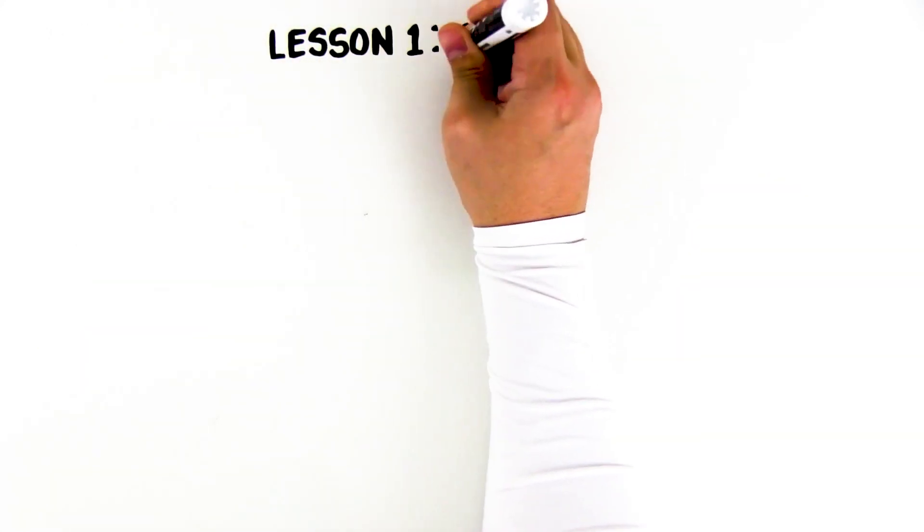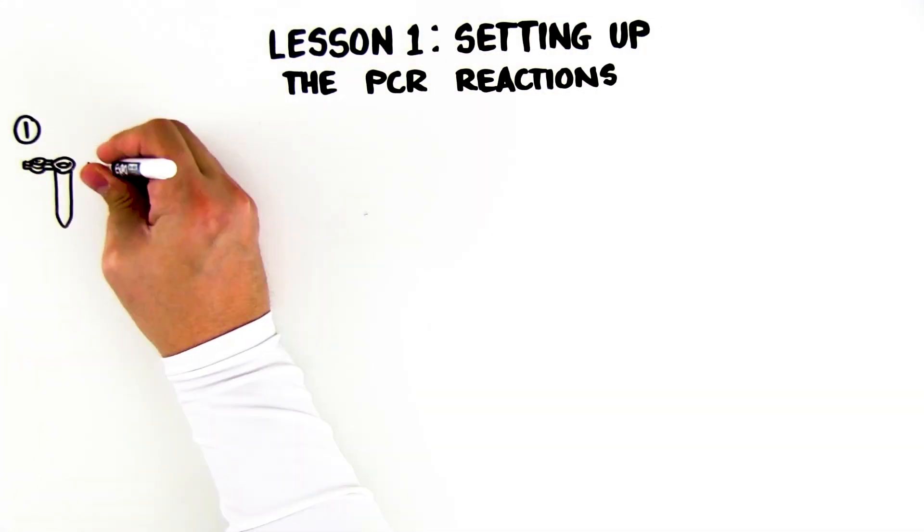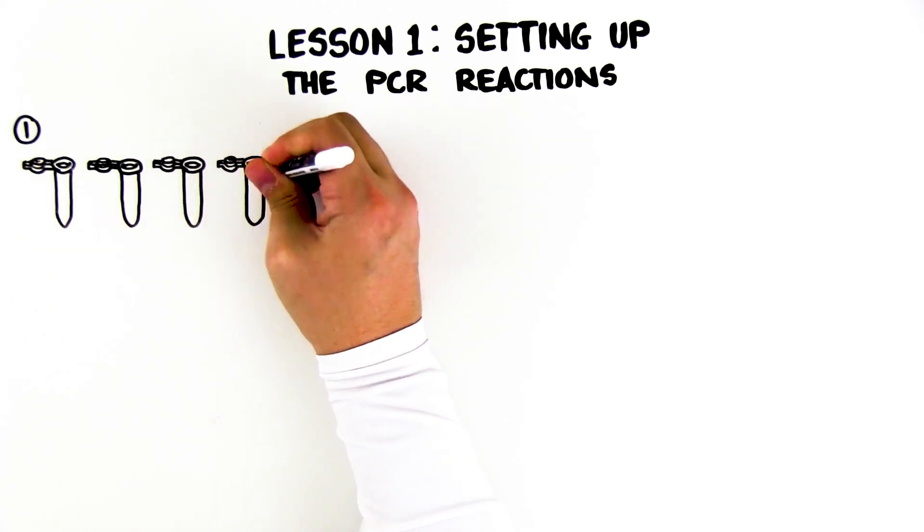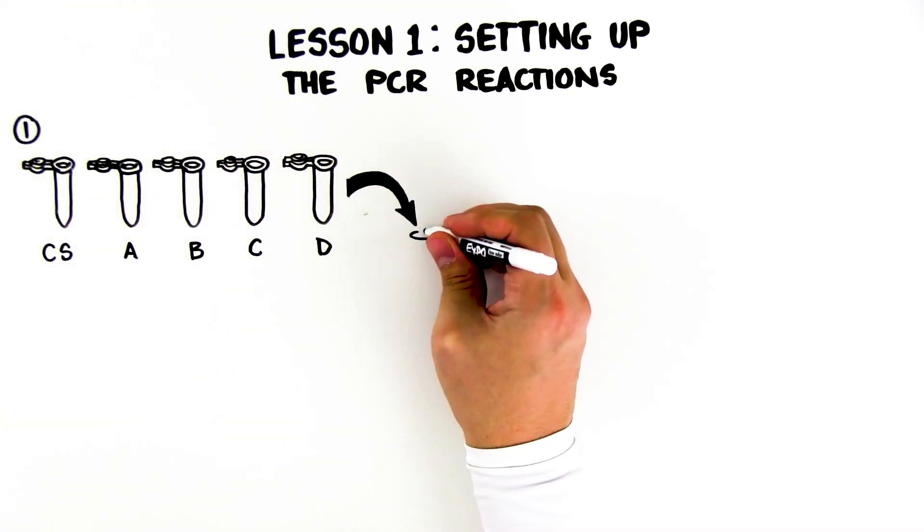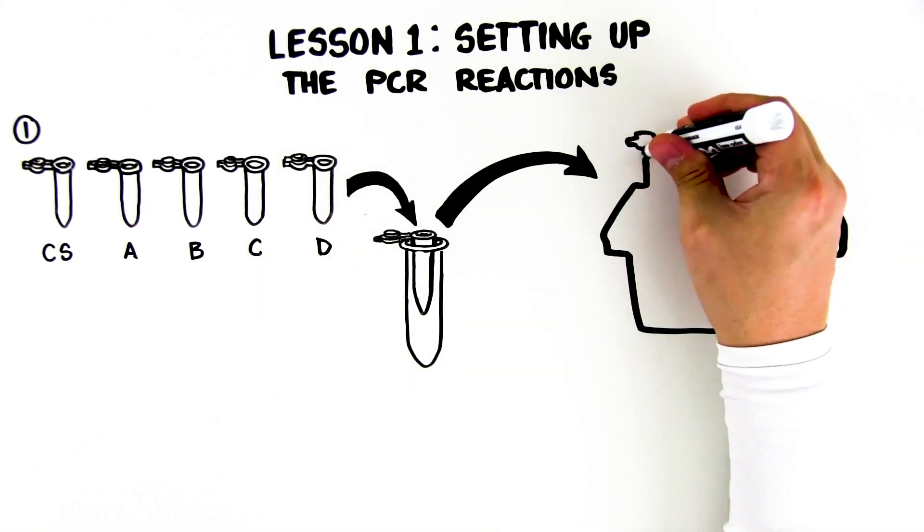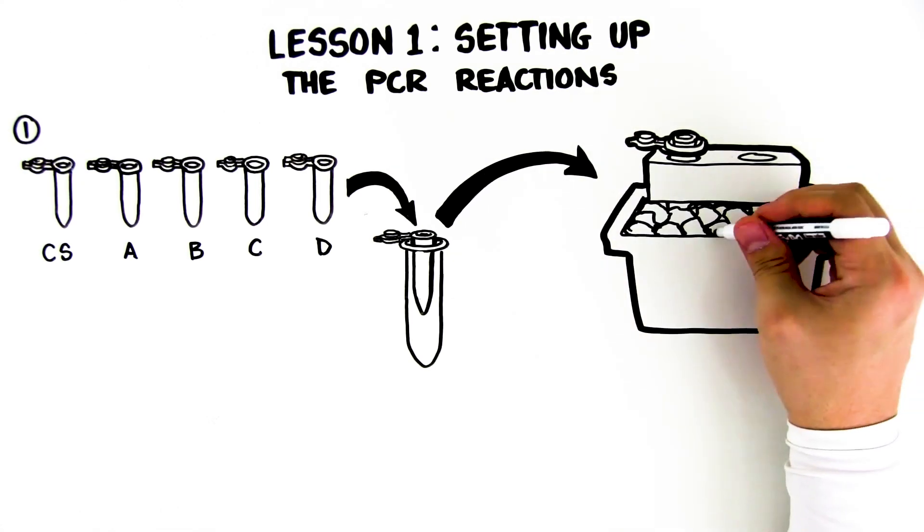Lesson 1: Setting up the PCR reactions. Step 1: Label 5 PCR tubes CS, A, B, C, or D, and include your group name or initials as well. Place each PCR tube into a capless microcentrifuge tube in the foam float on ice.